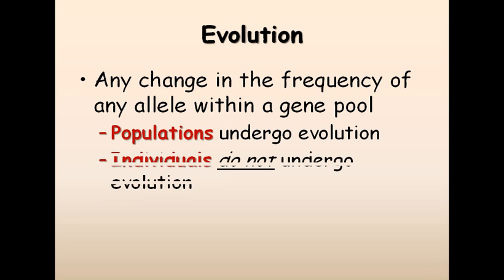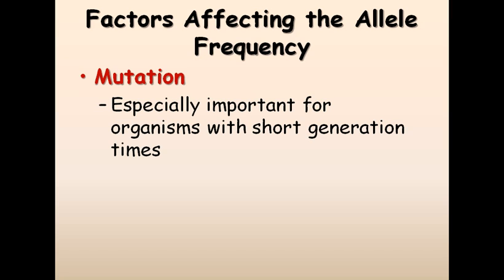These are the factors which affect allele frequency — also called the disrupting influences of nature. Mutation is especially important for organisms with short generation times. If a mutation happens, new generations reproduce really fast and all of them carry the mutated segments. Mutation is natural and can be random, and this random mutation can disrupt the gene frequency.